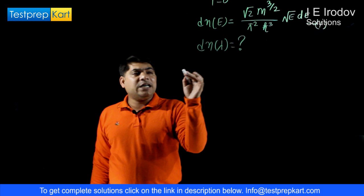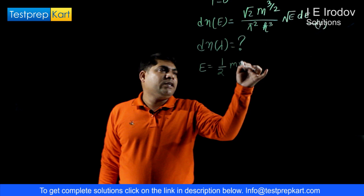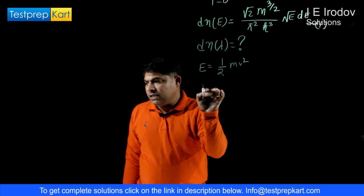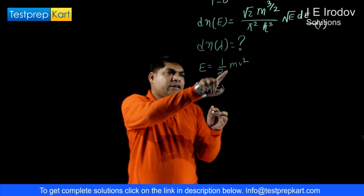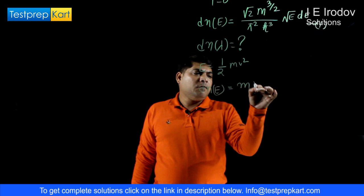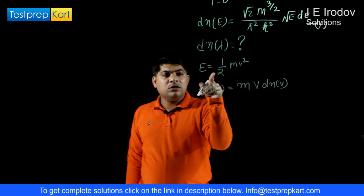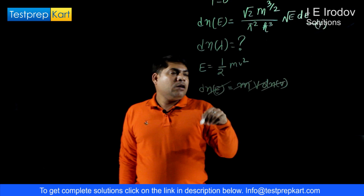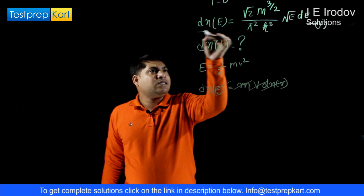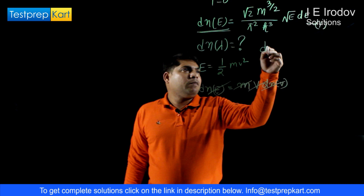We start with the expression that energy of a particle is E equals half mv squared. We differentiate this: dE equals mv dV, so the electron density variation can be written with respect to velocity as well. Differentiating E equals half mv squared gives dE equals 2V times m times dV — actually, accounting for the factor of one-half, dE equals mv dV.